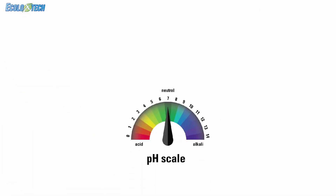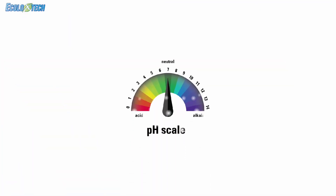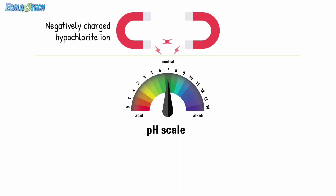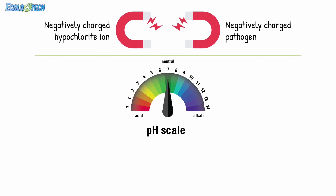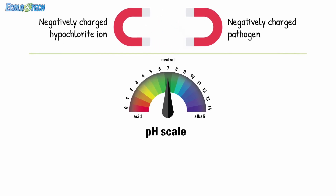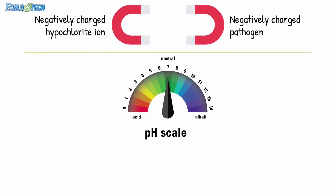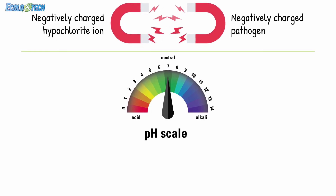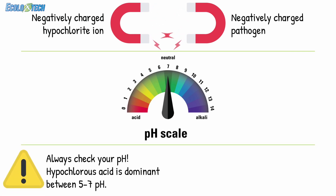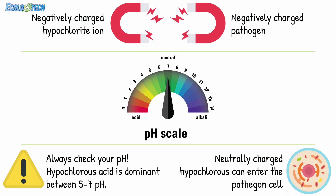Let's back up. What is pH? pH is a measure of the positively charged hydrogen ions. Low pH means more positive ions; high pH means a more negatively charged solution. Pathogens tend to be negatively charged. Unfortunately, so is hypochlorite — you might know this chemical by its street name, bleach. Because they're both negatively charged, pathogens and bleach tend to repel each other, kind of like two magnets. However, hypochlorous acid sits between 5 and 6 on the pH scale, which means it's neutrally charged.